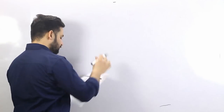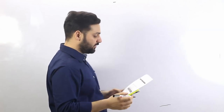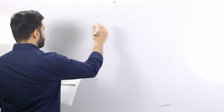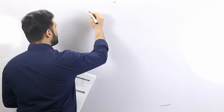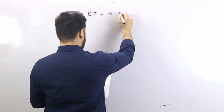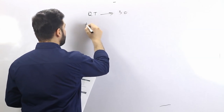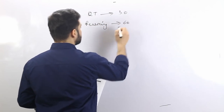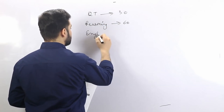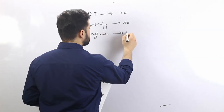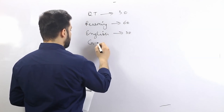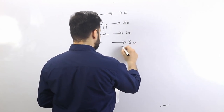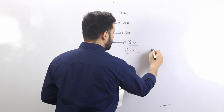In phase one, there are four subjects: quantitative aptitude, reasoning, English language, and general awareness. It is a 200-mark paper and it is all objective. Quantitative aptitude is 30 marks, reasoning is 60 marks, English is again 30 marks, and general awareness itself is 80 marks. Total 200 marks, 120 minutes.